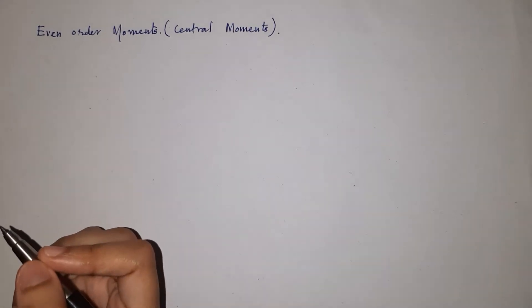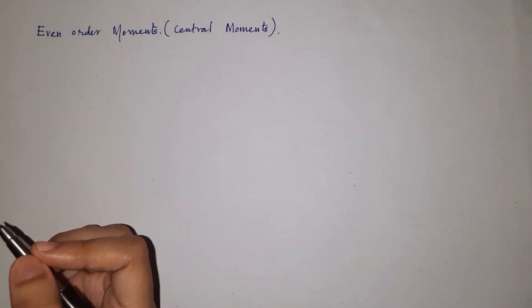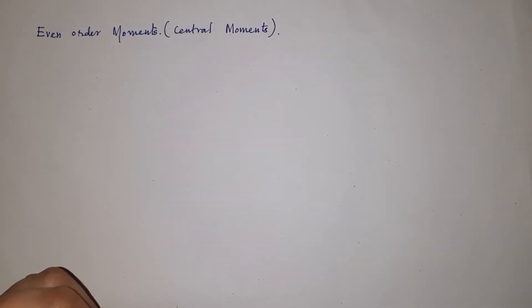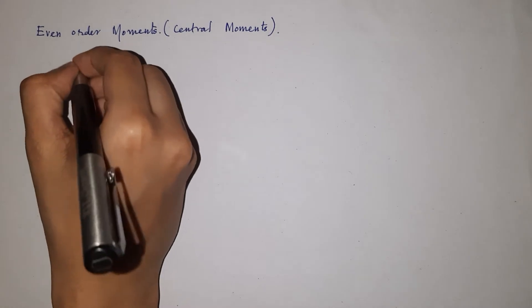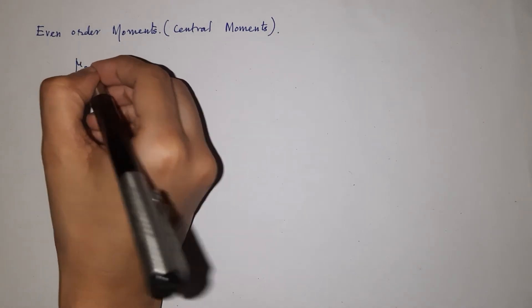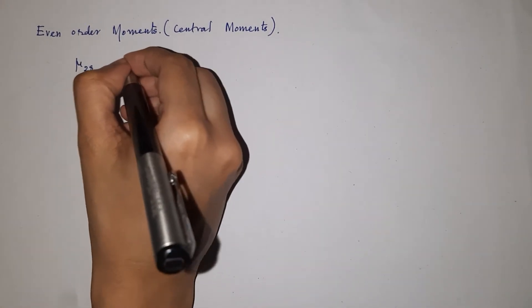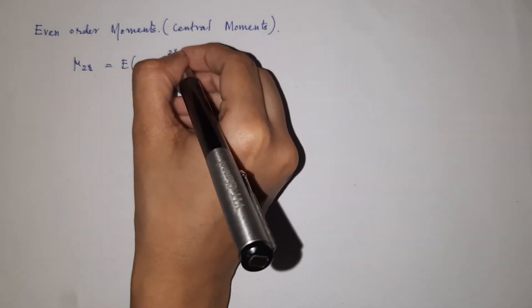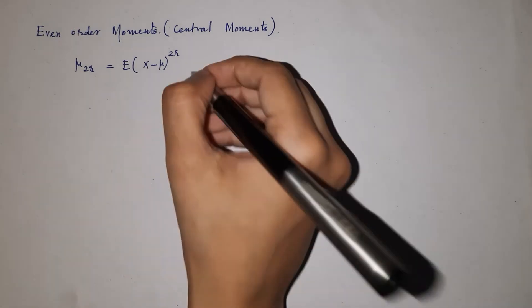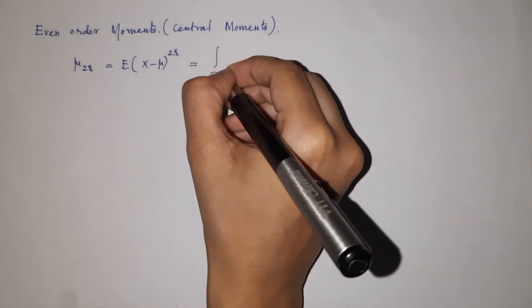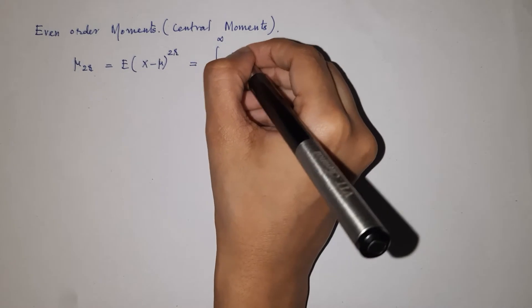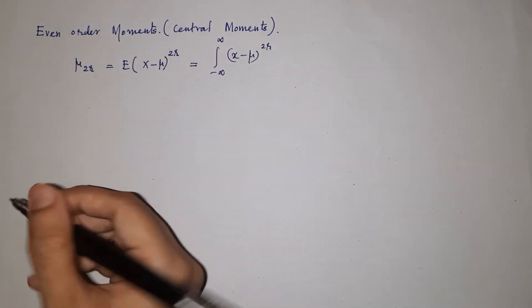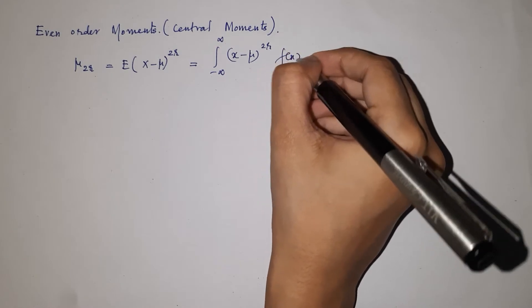In this video we are going to discuss the even order moments of the normal distribution. The even order moment is denoted by mu_2r, which is equal to the expectation of (x minus mu) raised to 2r. This equals the integral from minus infinity to infinity of (x minus mu) raised to 2r into f(x) dx.